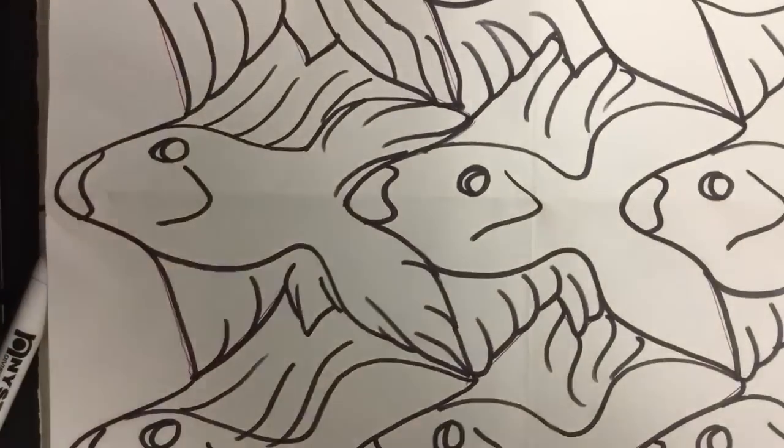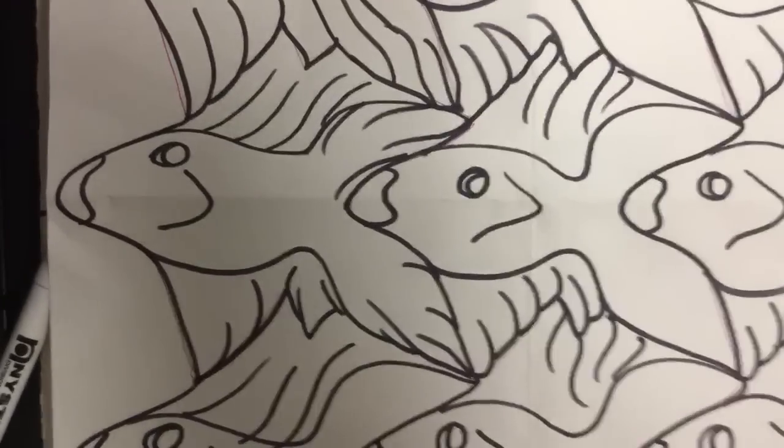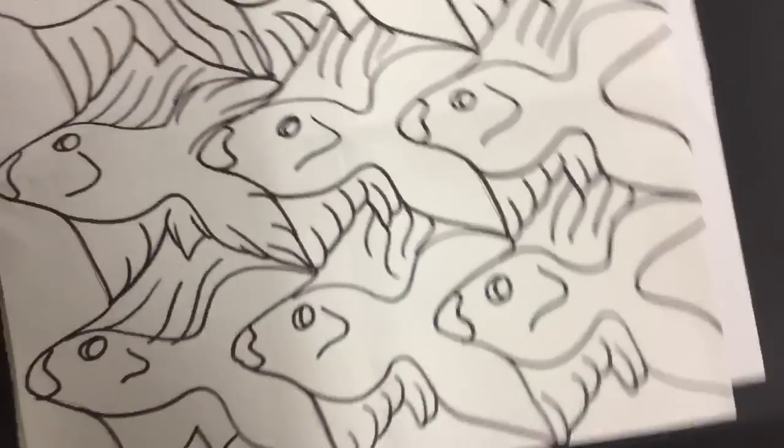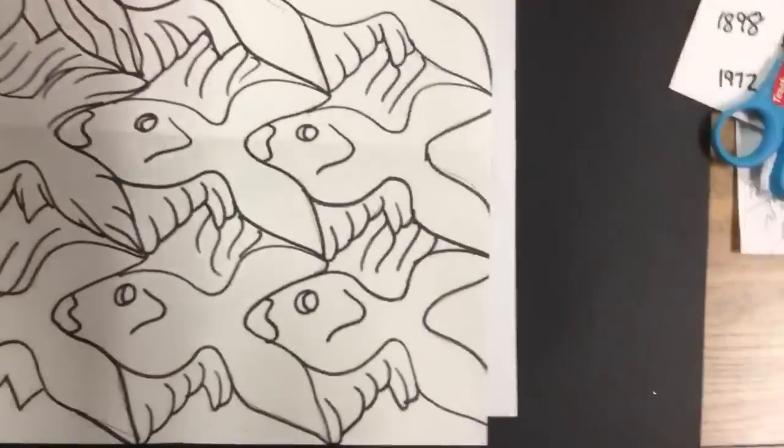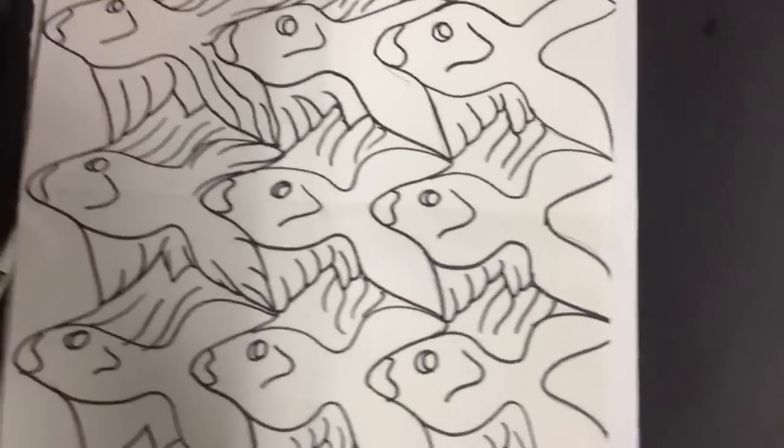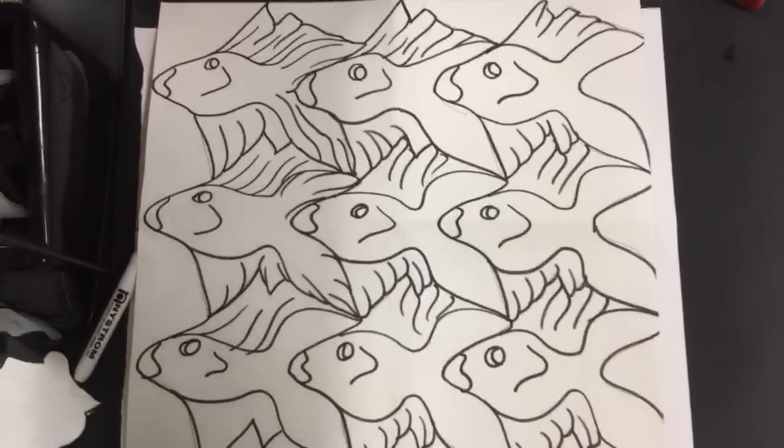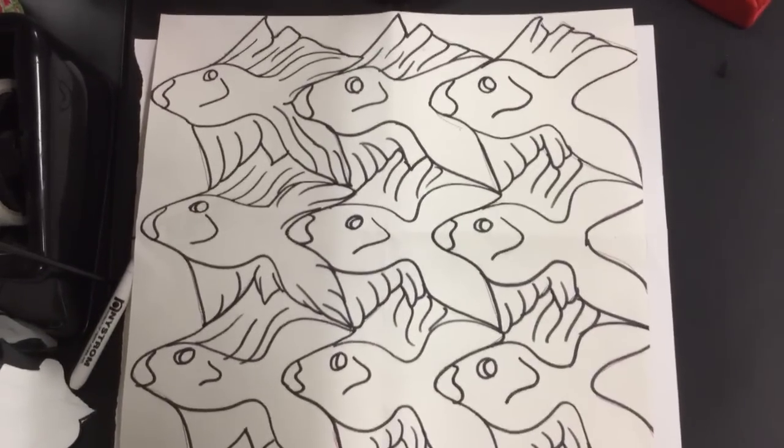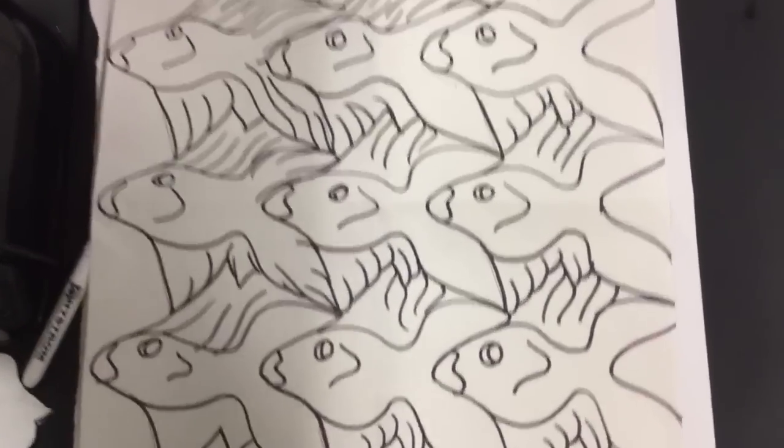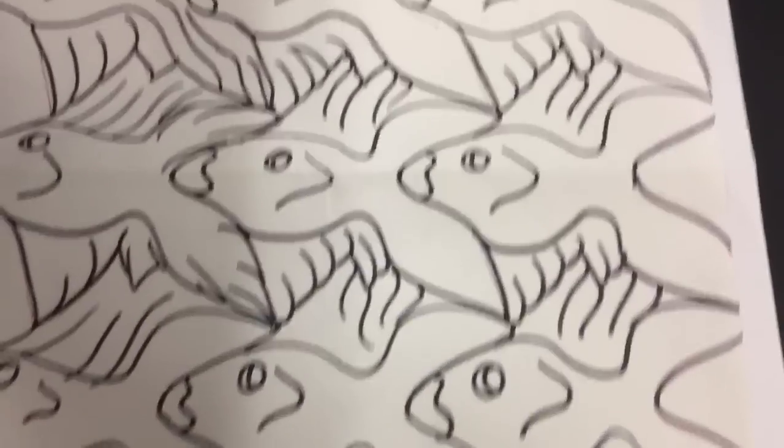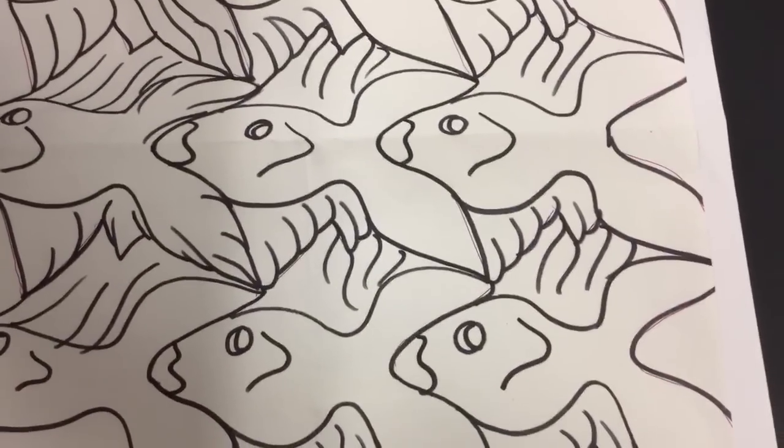And I'll show you the last one I did over here. This is the fish one right here. I'll show it to you, the full page. Let's see if I can get it. Let's see if I can get it to show full page. There. And there's a larger page of the fish tessellation. But they're all interlocking. And have fun making your own tessellation.